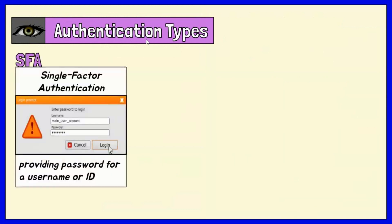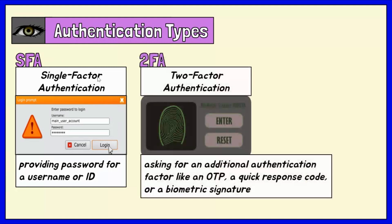For user identity, users are typically identified with a user ID. Authentication occurs when the user provides credentials such as a password that match their user ID. The practice of requiring a user ID and password is known as single-factor authentication or SFA. Organizations have strengthened authentication by asking for additional factors, such as a unique code sent to a mobile device, an OTP, a quick-response code, or a biometric signature. This is known as two-factor authentication or 2FA.